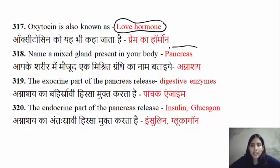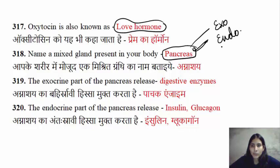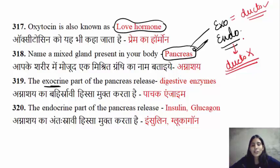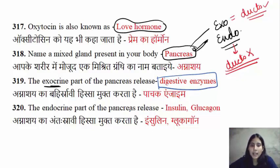The pancreas is a mixed gland. Why? Because the pancreas has both an exocrine function and an endocrine function. The exocrine part has proper ducts and releases secretions — specifically digestive enzymes — from the pancreas. The endocrine part releases hormones directly into the blood to help maintain glucose levels in your body.